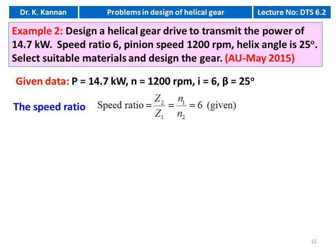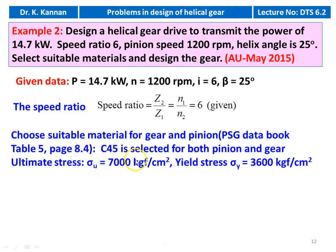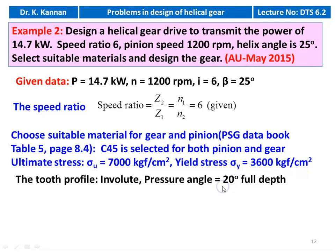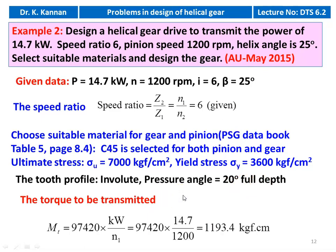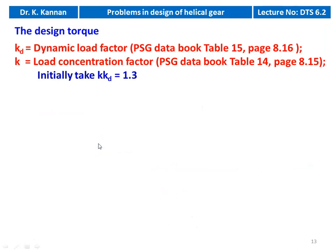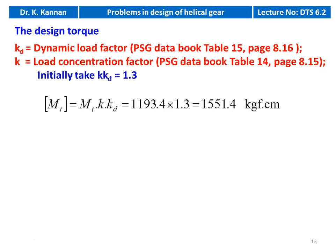We take C45 material again with σu = 7000 kg/cm² and σy = 3600 kg/cm², pressure angle 20° full depth, involute profile. Torque: Mt = 97420 × 14.7 / 1200 = 1193.4 kg/cm. Initially assuming KKD = 1.3, design torque [Mt] = 1193.4 × 1.3 = 1551.4 kg/cm. Equivalent Young's modulus for steel = 2.15 × 10⁶ kg/cm².